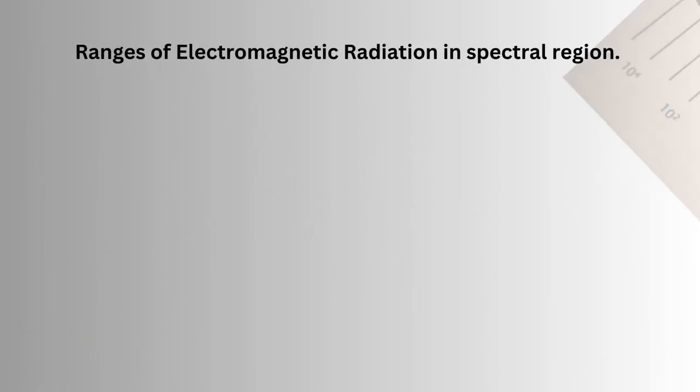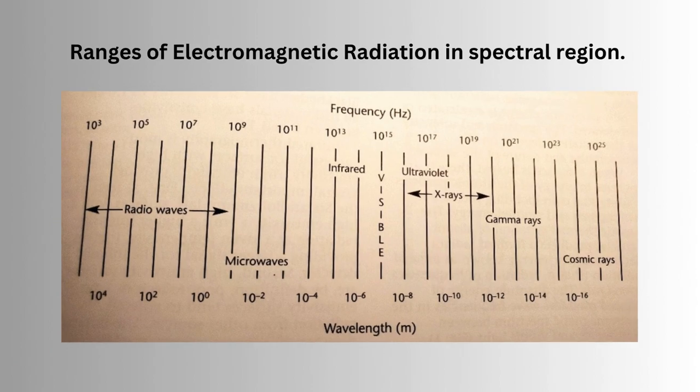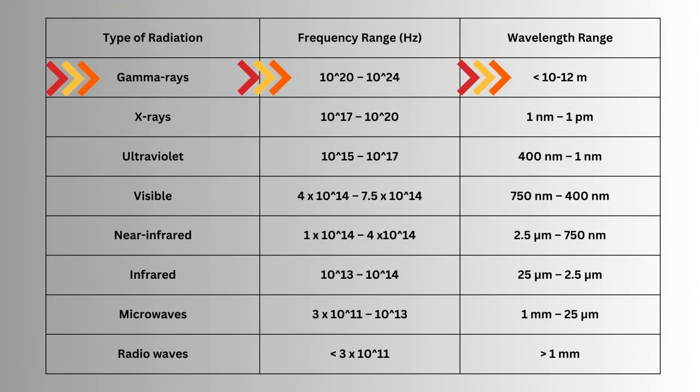Ranges of electromagnetic radiation in spectral region. Type of radiation, frequency range (Hz), wavelength range. Gamma rays: 10^20 to 10^24, less than 10^-12 m. X-rays: 10^17 to 10^21, 1 nanometer to 1 picometer.